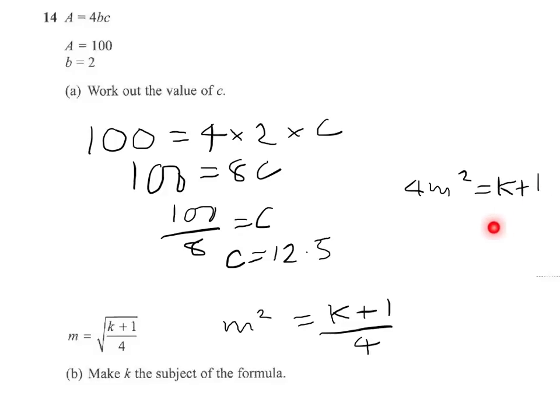And we'll move that 1 across the other side, so it needs to become minus 1. So we have 4m squared minus 1 equals k.